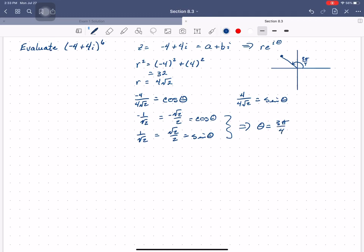So now I can write negative 4 plus 4i to the sixth power as r, which is 4 square root 2, times e to the i theta. So 3 pi over 4 times i, to the sixth power. And now we can use rules of exponents.